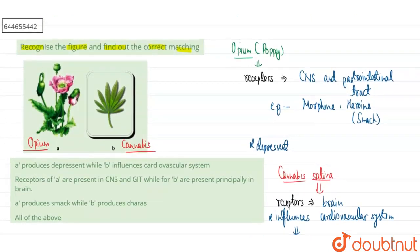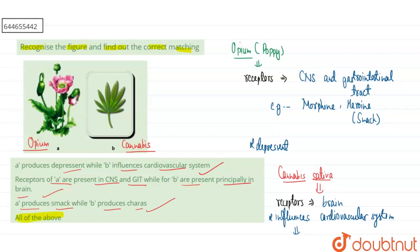Looking at the options: option one — A produces a depressant while B influences the cardiovascular system — is correct. Option two — receptors of A are present in CNS and GIT, while receptors of B are present principally in brain — is also correct. Option three — A produces smack while B produces hashish — is also correct. Therefore, the correct answer is option four: all of the above.